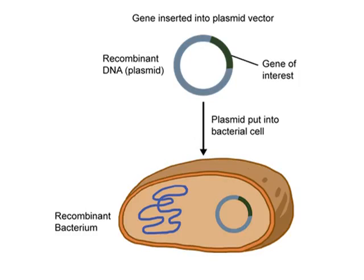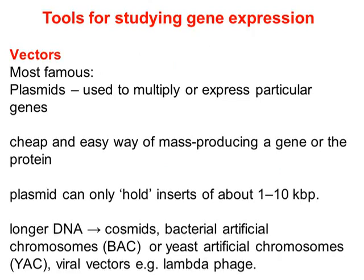البكتيريا المؤشبة (recombinant bacteria) هي التي ستأخذ الـ recombinant DNA — أي الـ plasmid زائد الجين المطلوب. الـ plasmids هي الأشهر كـ cloning vectors لأنها تتكاثر لوحدها بمعزل عن الكروموسوم البكتيري، مما يُنتج أعداداً كبيرة جداً من النسخ ويدعم الـ cloning.